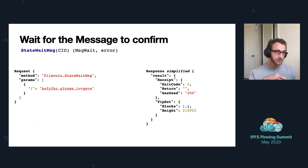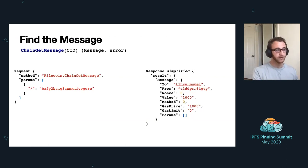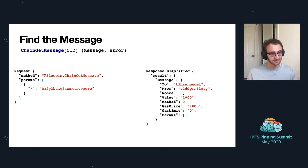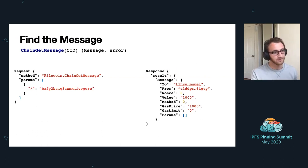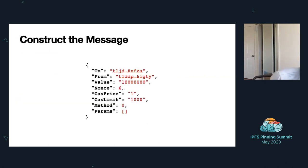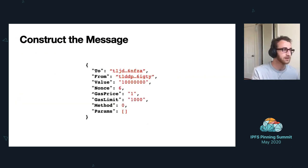Once we get that confirmation response, we can go ahead and find the message using ChainGetMessage, passing the CID. The message you get back is the exact one we composed in step three — the message with all its fields. And that's all six steps.